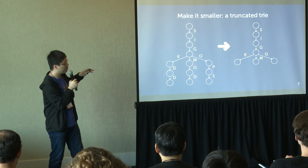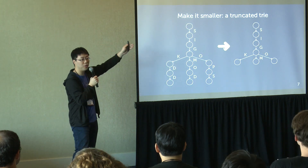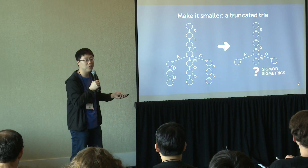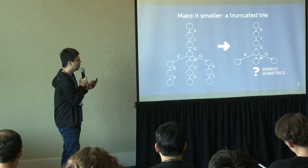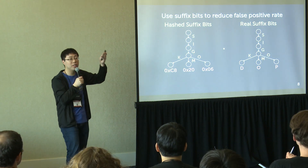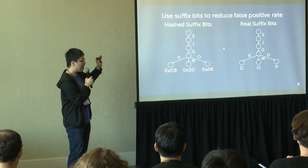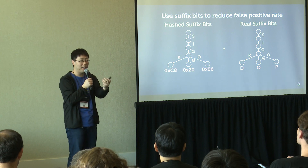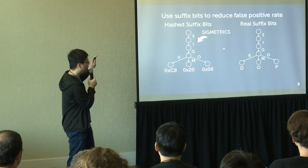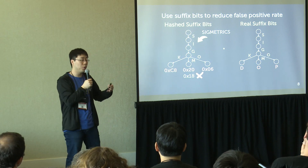Our first attempt to make the data structure smaller is to truncate the trie. Instead of storing the full keys, we only store the unique key prefixes. For example, instead of SIGMOD, we only store SIGM. This truncation saves a lot of space, but it also introduces false positives — we can no longer distinguish between SIGMOD and SIGMETRICS. So to compensate for this lost accuracy, we add back a few suffix bits to each key prefix to make it more distinguishable. We introduce two types of suffix bits: the hash suffix bits and the real suffix bits. We obtain hash suffix bits by taking the hash of the full key and extracting a few bits as the key's fingerprint. We can then use this fingerprint to reject false queries. When the SIGMETRICS query reaches the leaf node, we compute its hash and compare it to the stored hash bits, and there's a high probability we'll find a mismatch.